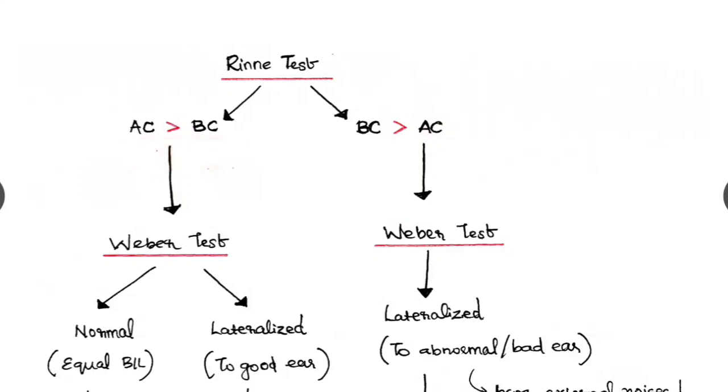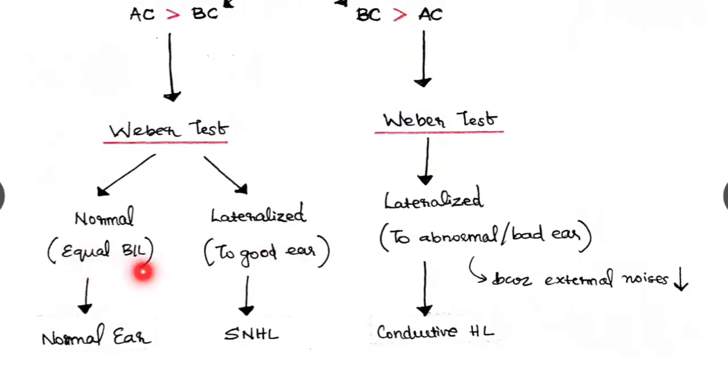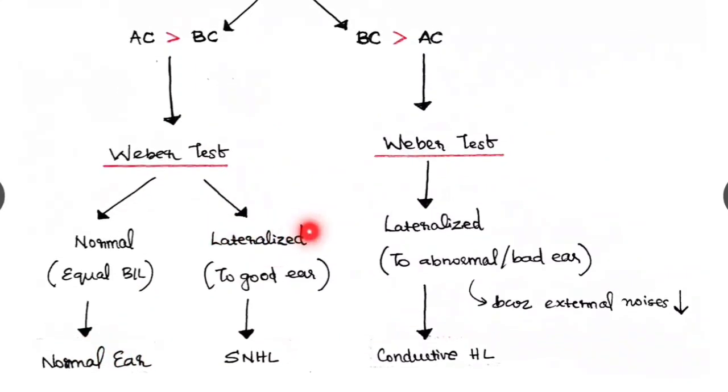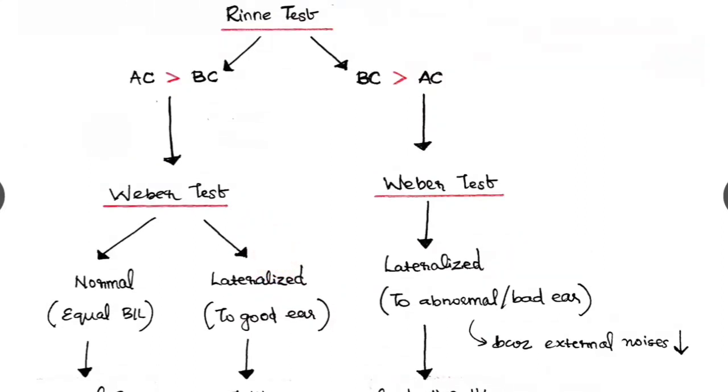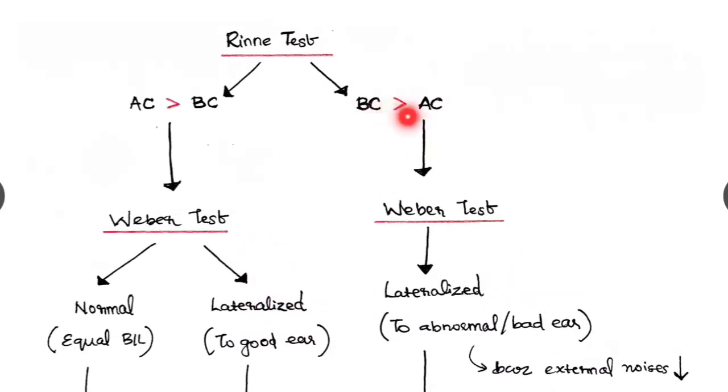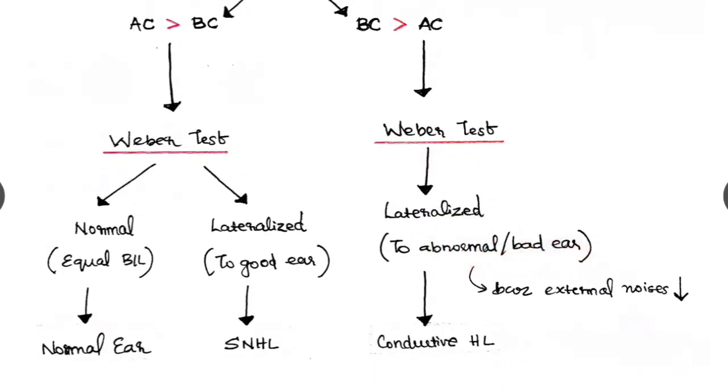In Rinne test we do, if the air conduction is greater than the bone conduction, then we check the Weber's test. And if the Weber's test is equal, that is the sound is heard bilaterally equal, then the patient has normal ears. If the Weber's test is lateralized to the good ear, it will be SNHL, Sensory Neural Hearing Loss. And if we are getting bone conduction more than air conduction in Rinne test, then it is always abnormal. Here the Weber's test will be lateralized to the abnormal or bad ear. Why? Because as air conduction is less than bone conduction here, there will be reduced external noises. So it is more heard in the abnormal ear. So it is suggestive of conductive hearing loss.